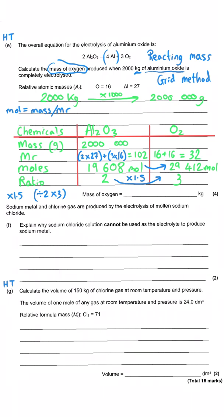Our final step is mass = MR × moles. Doing 29,412 × 32 gives 941,000 grams — or 941,176 g to be precise, but 941,000 to three significant figures is fine. We then convert to kilograms by dividing by 1000, giving 941 kilograms of oxygen produced.